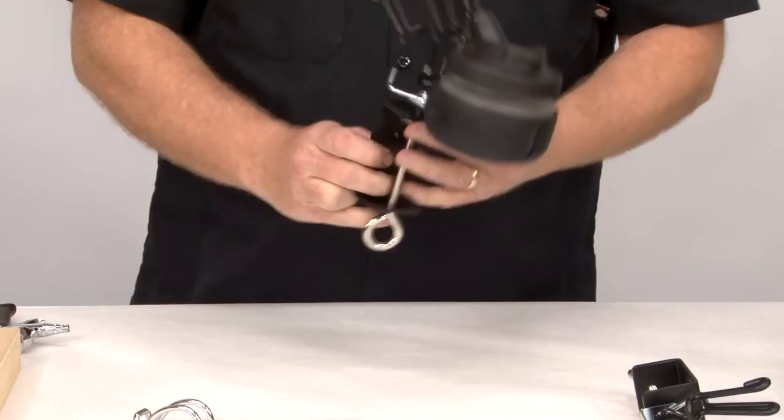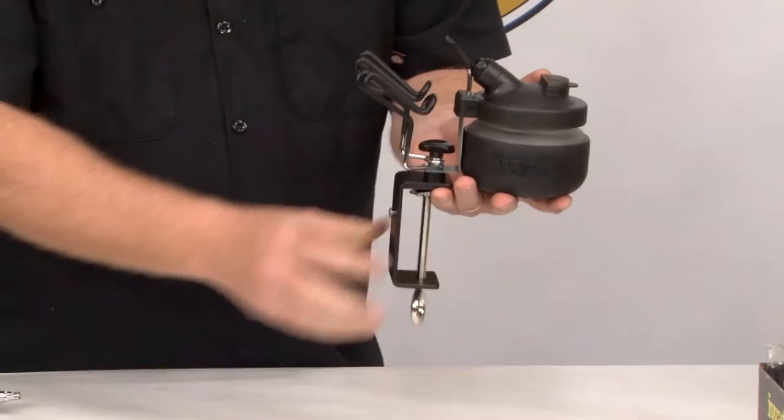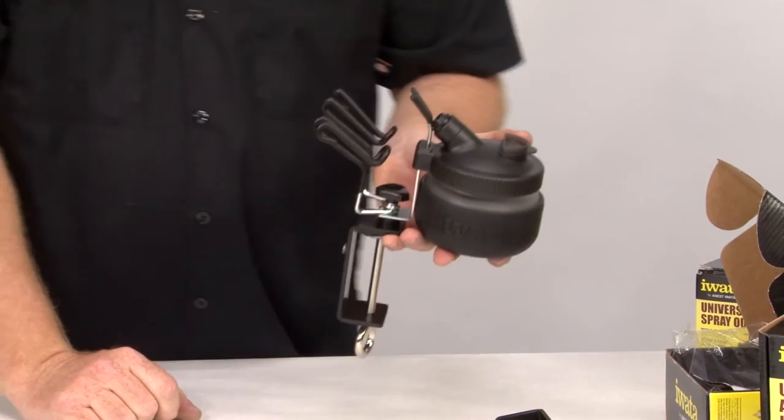And there you have the workstation. You've got the rubberized mount. This clamps onto the table, and you also have three airbrush holders now instead of just two. You've got three-quarters of your workstation.